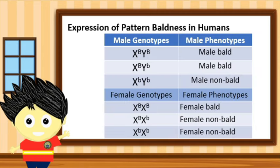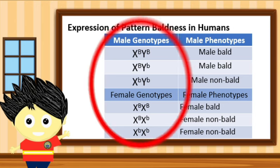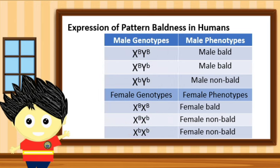Let us use this table to understand how the gametes of an organism with pattern baldness are expressed under sex-influenced trait. In the table showing the expression of baldness in humans, we can notice that, similar to the sex-limited traits table, the alleles representing pattern baldness are included with the sex chromosomes of the organism. We use capital letter B for the baldness trait and small letter b for the non-bald trait.